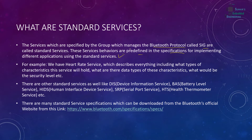After we finish discussing services, we are going to check standard service specification documents. For example, the heart rate service describes everything — what types of characteristics it will hold, like heart rate and body sensor location, what the data types of these characteristics would be (for example unsigned int 8, 16, or other integer types), and what the security level is to access these characteristics. Some data you want the user to access securely, so nobody else can see it — we will see that later.